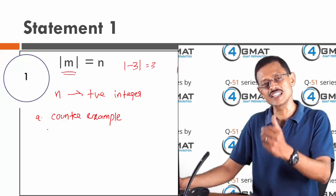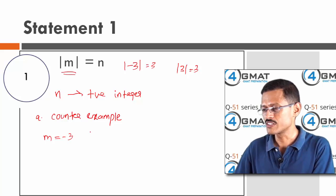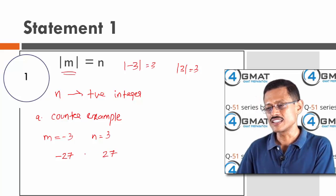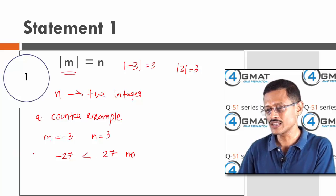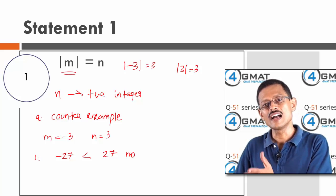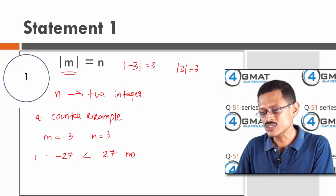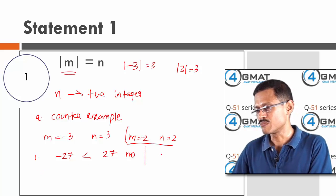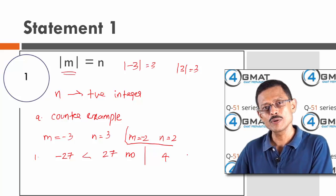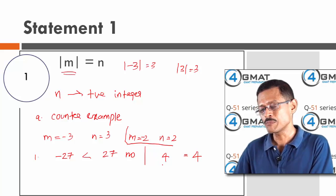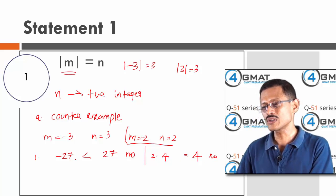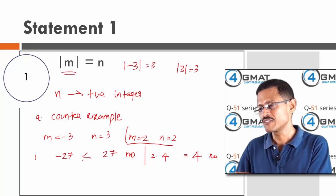Let's try m equals minus 3, so n equals 3. m power n is minus 3 power 3 equals minus 27; n power n is 3 power 3 equals plus 27. Is m power n greater than n power n? No. Now try m equals minus 2, n equals 2. m power n is minus 2 power 2 equals 4; n power n is 2 power 2 equals 4. They are equal, so m power n is still not greater than n power n — answer is no. For negative m, whether odd or even, we got a uniform no.